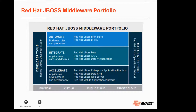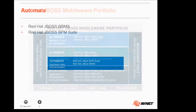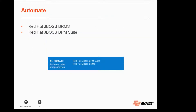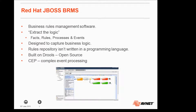Automate contains JBoss BRMS and Red Hat JBoss BPM Suite. Red Hat JBoss BRMS is a business rules management software. The principle idea behind BRMS is to extract the logic, the facts, the rules, the processes, and events that organizations run by and are run on. It's designed to capture that business logic and get it formalized, get it into a system where these rules can be looked at and analyzed.